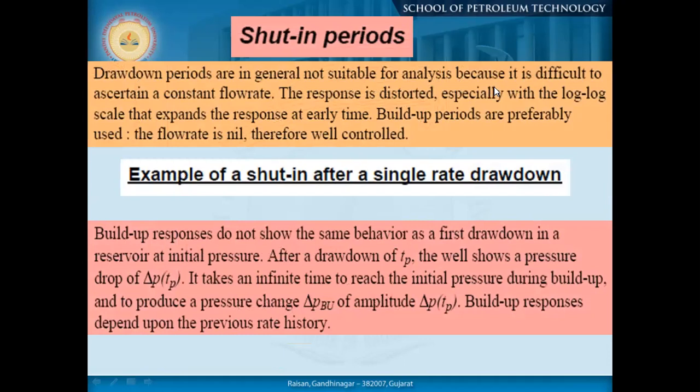Drawdown periods are generally not suitable for analysis because it is difficult to assign a constant flow rate. The response is distorted, especially with the log-log scale that expands the response at early time. Buildup periods are preferably used because the flow rate is nil and therefore well controlled. After a single-rate drawdown, buildup response does not show the same behavior as a first drawdown in the reservoir at initial pressure.